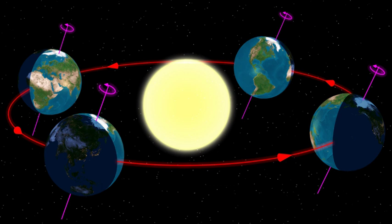Heliocentrism is the scientific model that first placed the Sun at the center of the solar system and put the planets, including Earth, in its orbit. Historically, heliocentrism is opposed to geocentrism, which placed the Earth at the center.